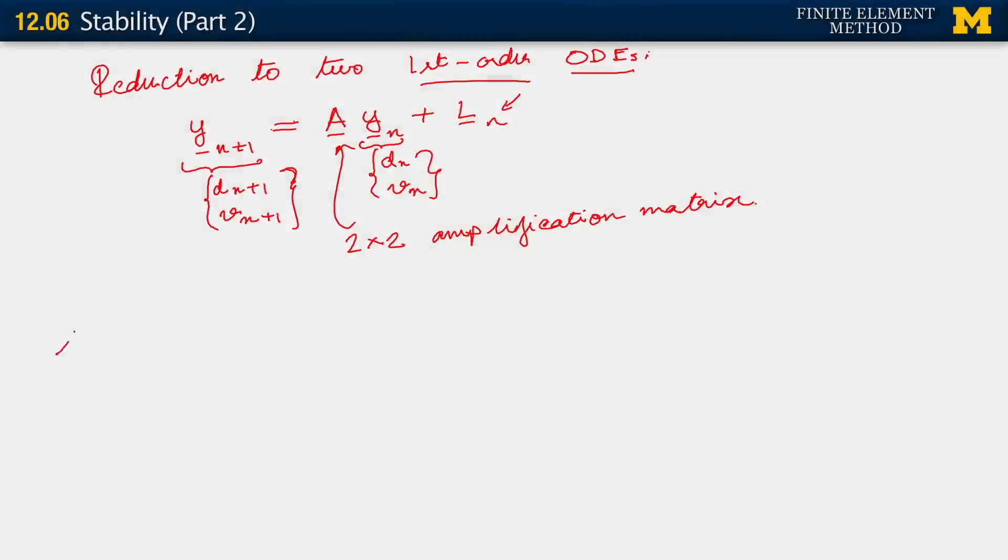I'm going to give you a summary of the stability results right now. Stability: if 2 beta is greater than or equal to gamma, is greater than or equal to half, we have unconditional stability.